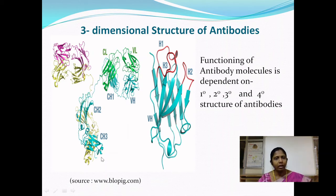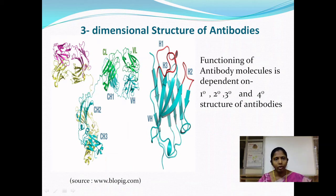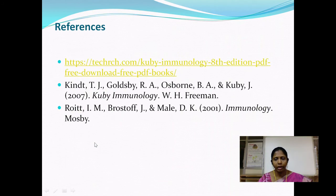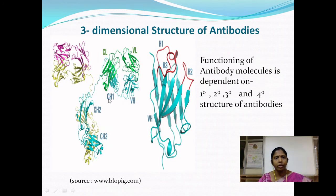Glycosylation of the crystallizable fragment, or the constant region, is very important in enhancing the solubility of the antibody molecules so that they can be circulated throughout the body.